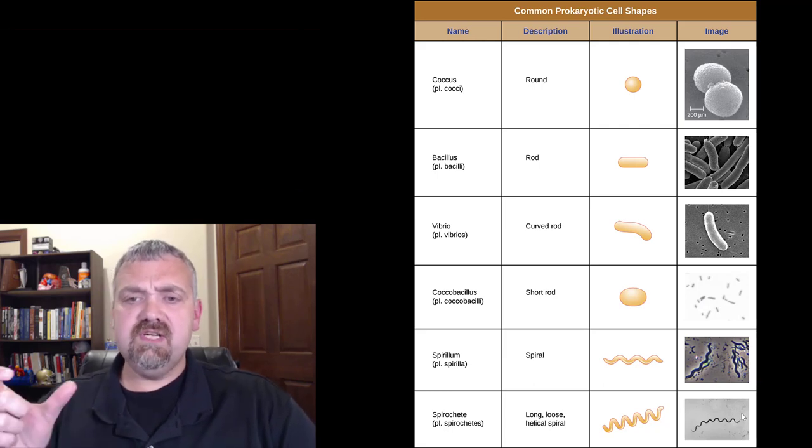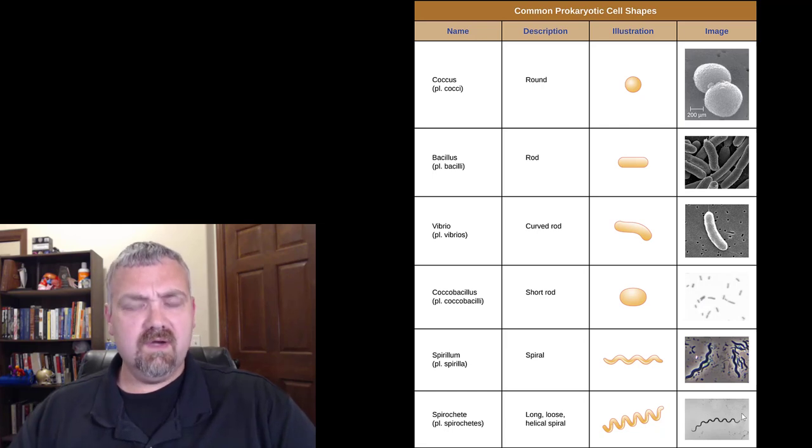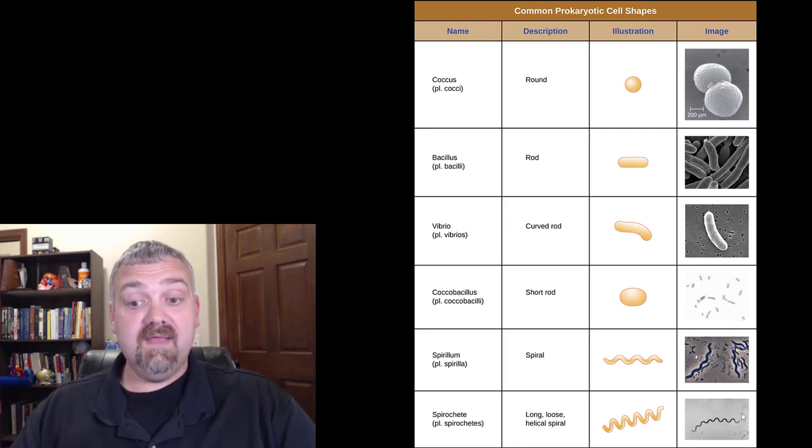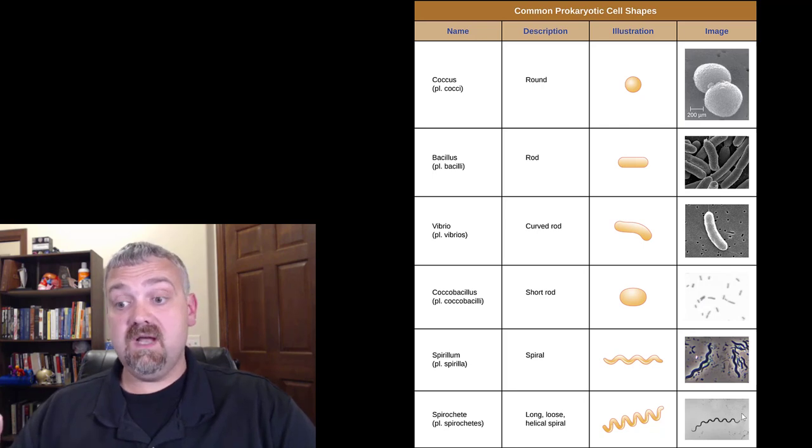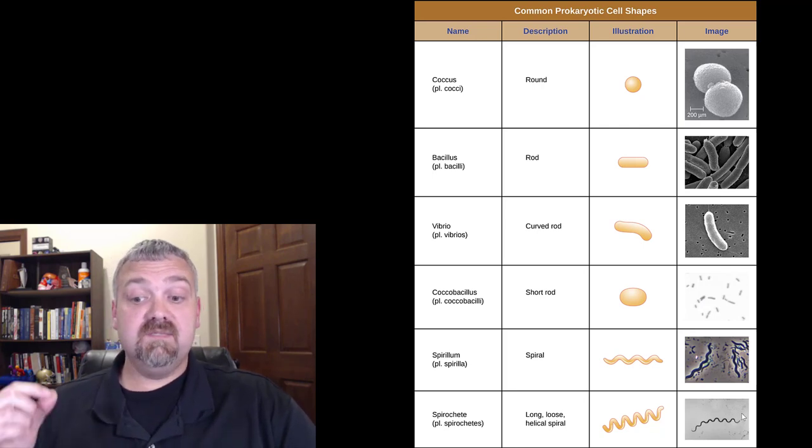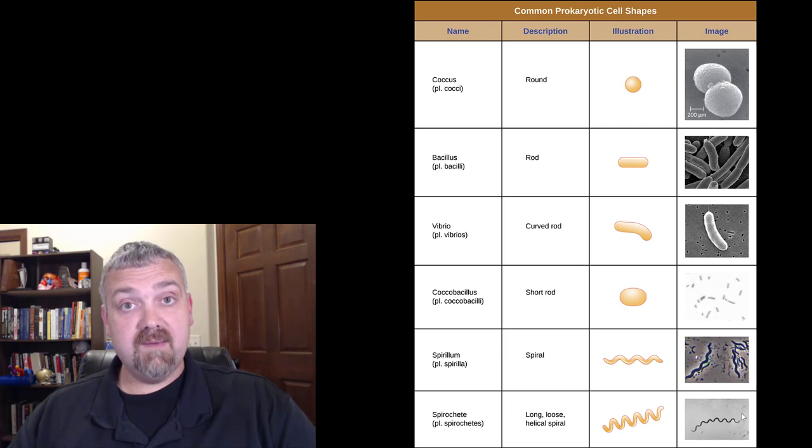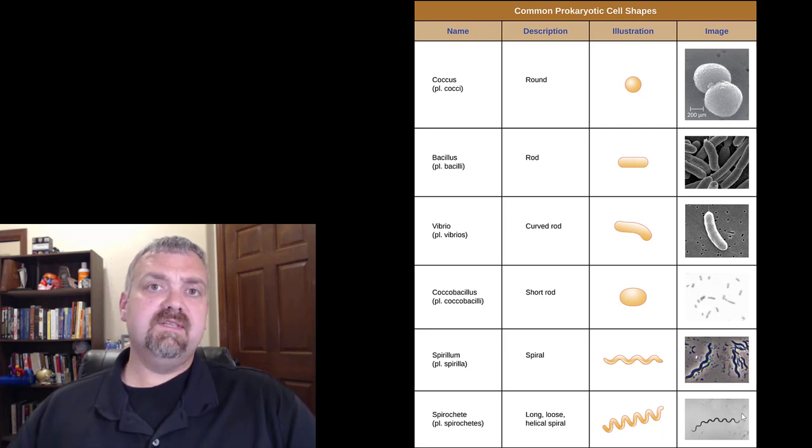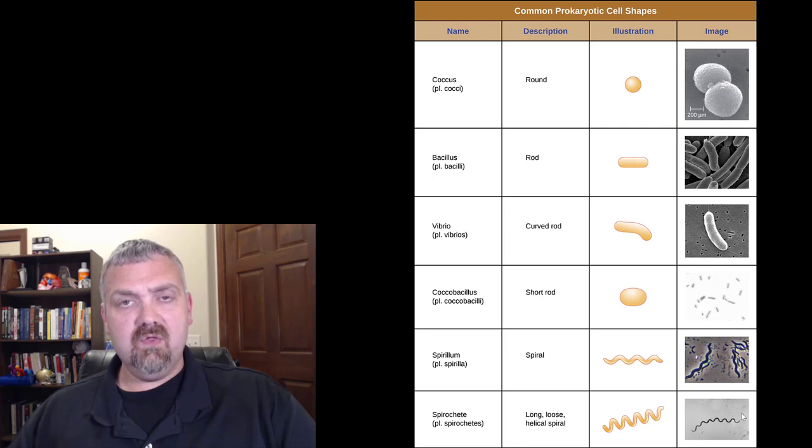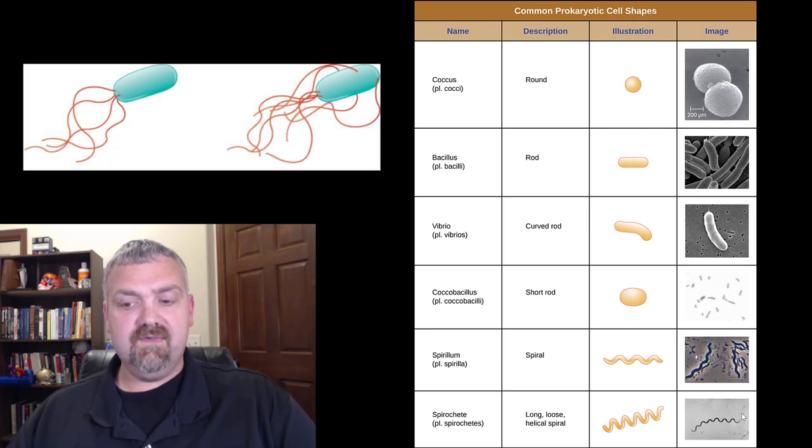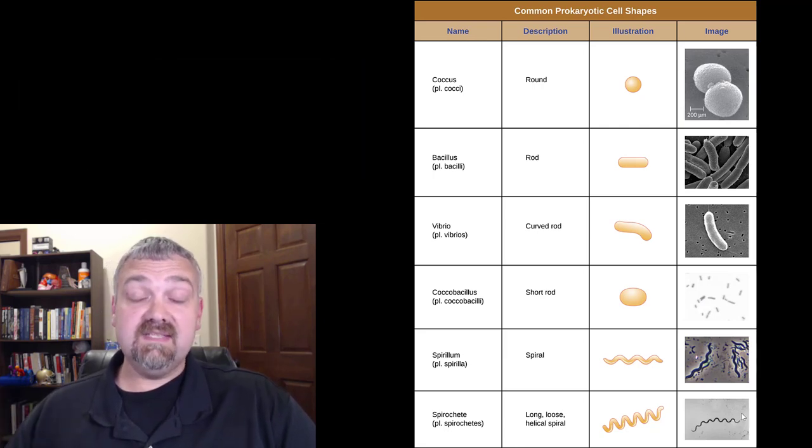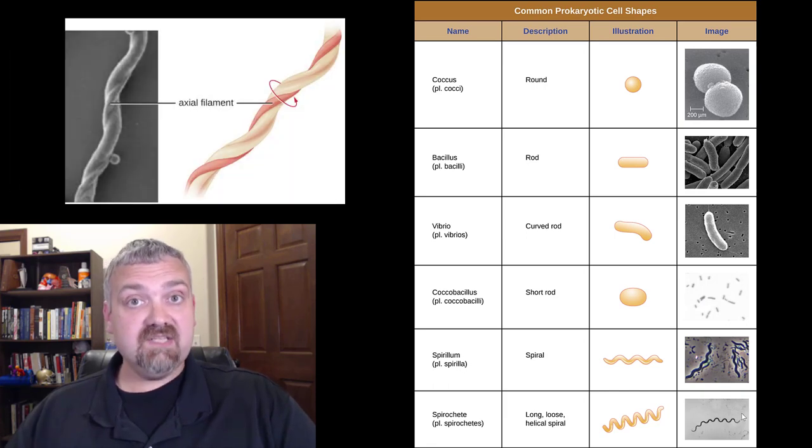Next we have the spirillums. These are rigid, large organisms that are spiral or corkscrew shaped. Not any really important clinical examples here, but I do want to point out that the spirillum and the spirochetes, they're both examples of spiral organisms, but there's a couple clear differences. Spirochetes are also going to be corkscrew shaped and more flexible. Here's the key difference. The spirillum organisms are propelled by flagella on their ends. The spirochetes use a special kind of flagella, which is called an axial filament.